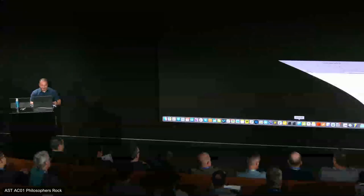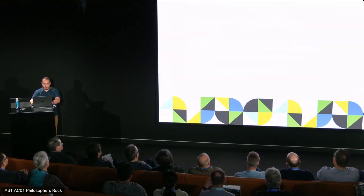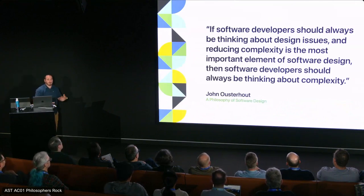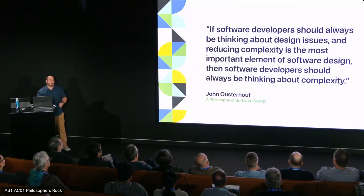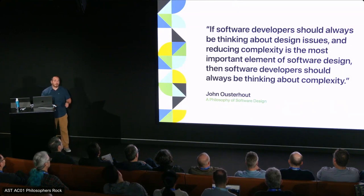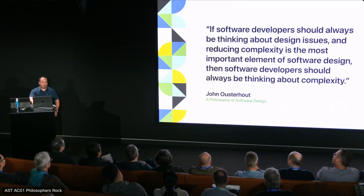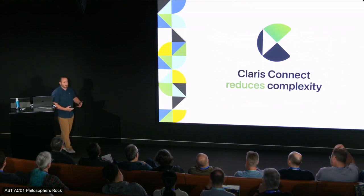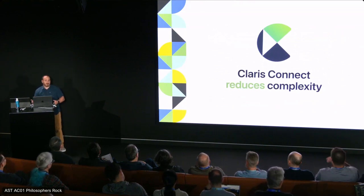We've got more work to do. I'd like to introduce a quote that really resonated with me from John Osterhaus, a professor of computer science who spent a long time studying the code of students who graduated with computer science degrees. He wrote a book called 'A Philosophy of Software Design,' and he said: if software developers should always be thinking about design issues, and reducing complexity is the most important element of software design, then software developers should always be thinking about complexity — specifically reducing complexity. I propose that Claris Connect reduces that complexity. It allows you to abstract the complex integration logic in your FileMaker scripts — logic that's really hard to version, even harder to test — and move it into an area that's easy to understand, easy to view, and easy to examine via history.